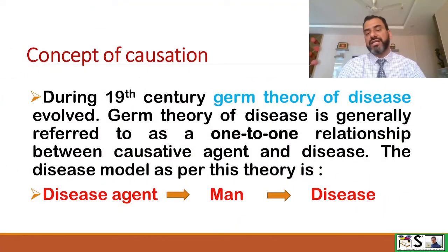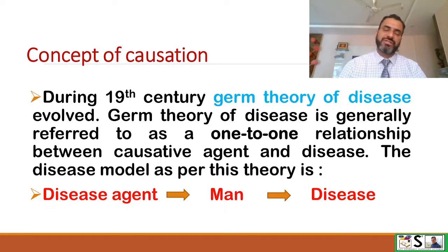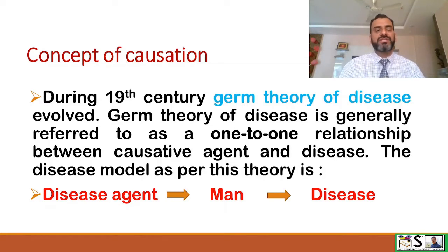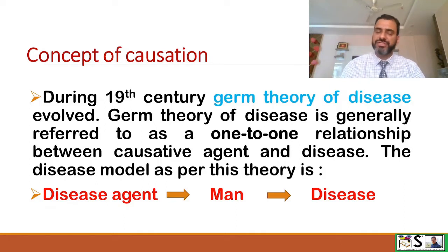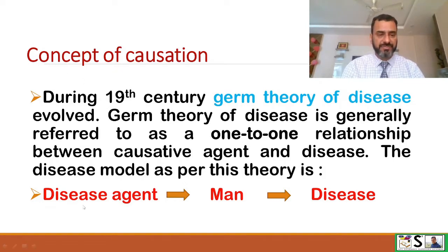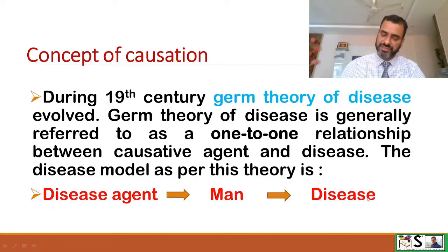During the 19th century, the germ theory of disease evolved. The germ theory of disease is generally referred to as a one-to-one relationship between the causative agent and the disease. The disease model as per this theory is that if a disease agent is present and interacts with a human being, then disease appears.